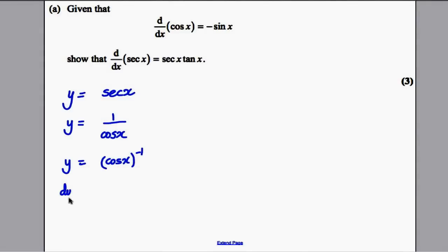So dy by dx, we can use the power version of the chain rule. You bring down the negative one. You multiply by the differential inside the brackets. The differential of cos, we're told, is negative sine. And you keep the bracket as it is, cosine x, but you reduce the power by 1, so it's negative 2.